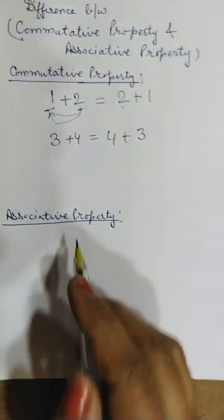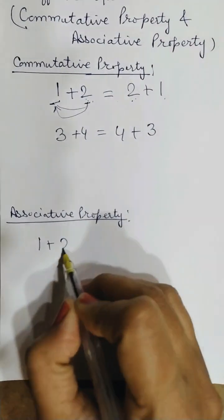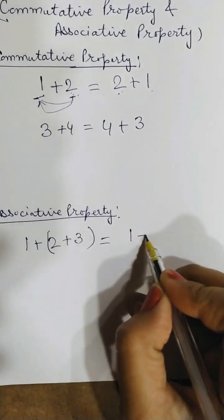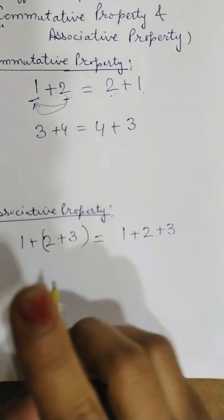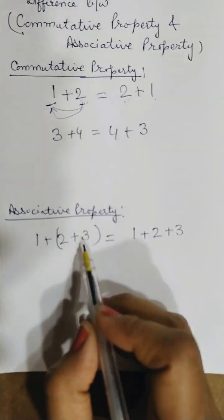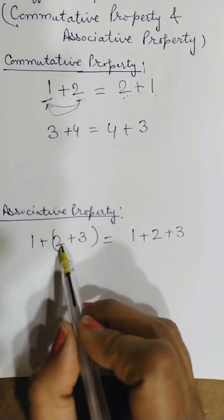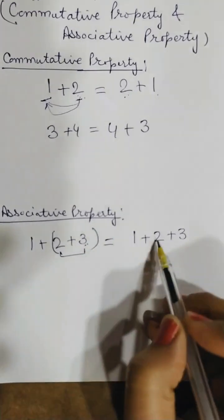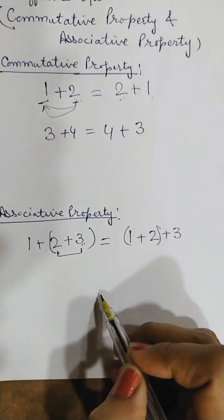So this is commutative property. But in associative property, we have three numbers, say, and their groups are changed. Their positions are not changed, their groups are changed. Here, in the first place, if the bracket is between 2 and 3, meaning if 2 and 3 are clubbed together, then here 1 and 2 are clubbed together.